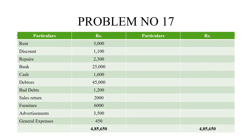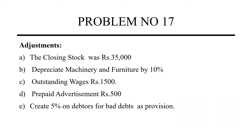This is the question. In this problem there are many items. We will see how each one reflects. The first adjustment is closing stock, which is Rs. 35,000. Closing stock goes on the trading account credit side and also on the asset side of the balance sheet.